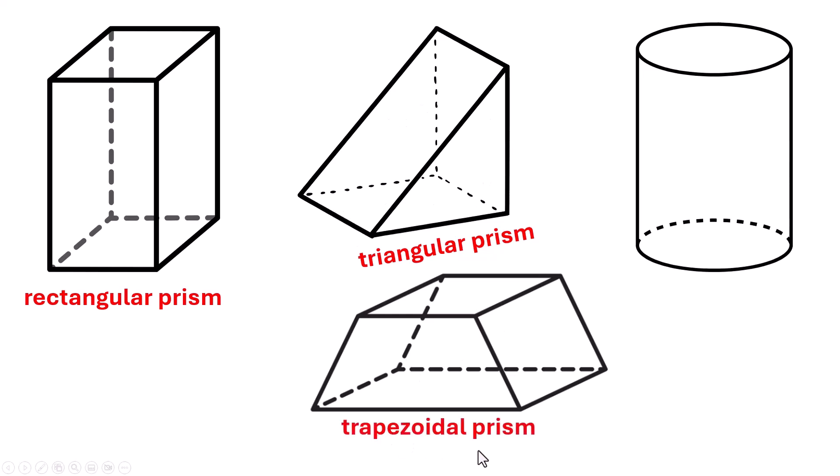This is a trapezoidal prism. You can see that there's a trapezoid in the front and the trapezoid in the back. The sides are going to be rectangles. This one isn't called a prism because it's not a prism. It doesn't have corners and sides. It's a cylinder.